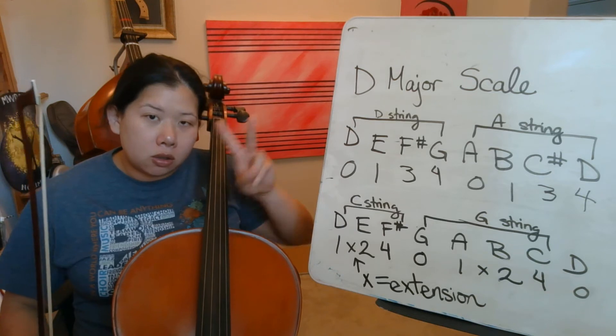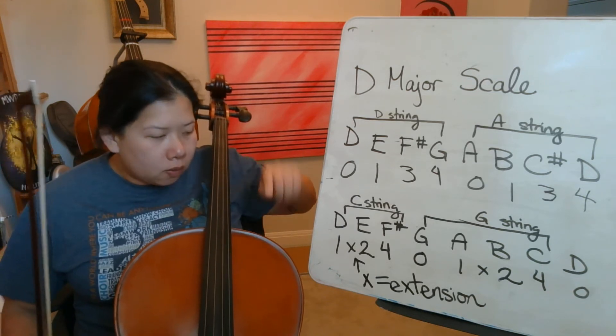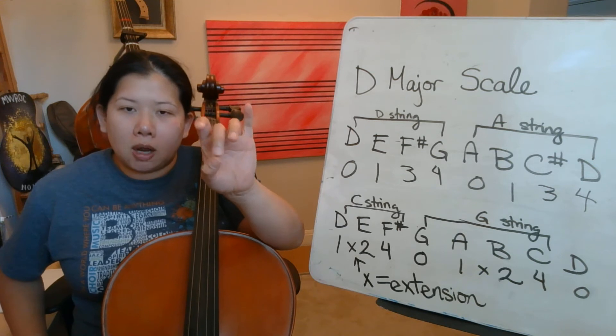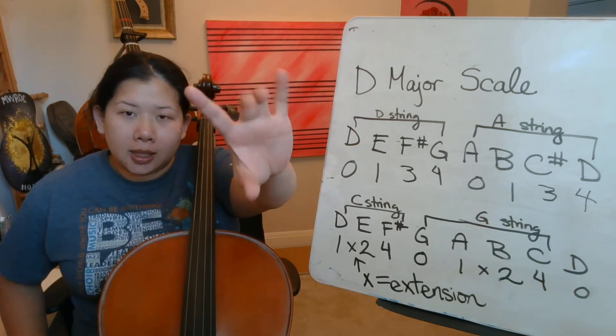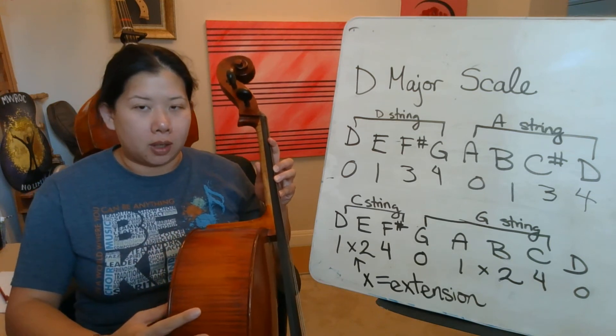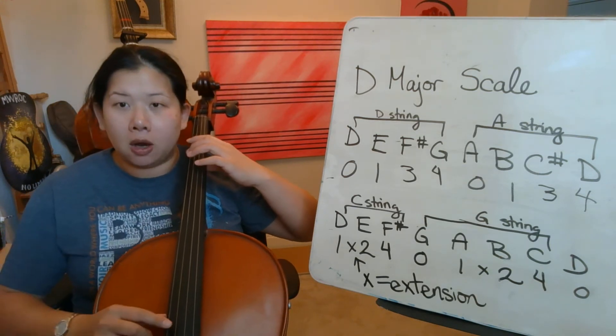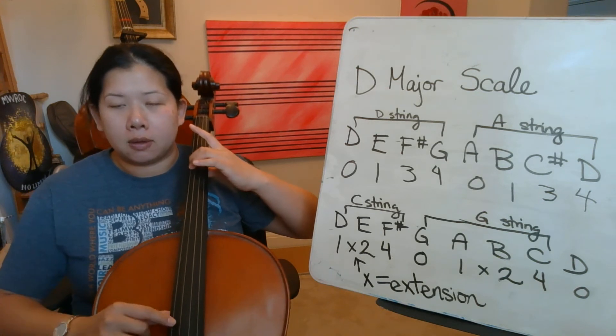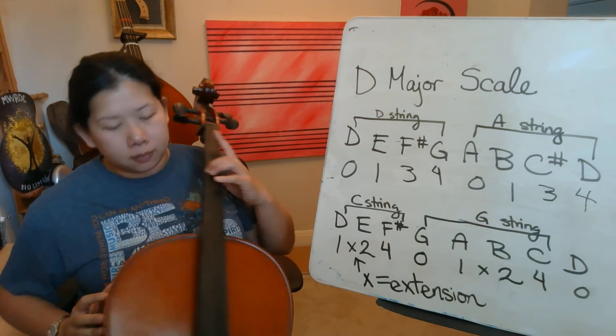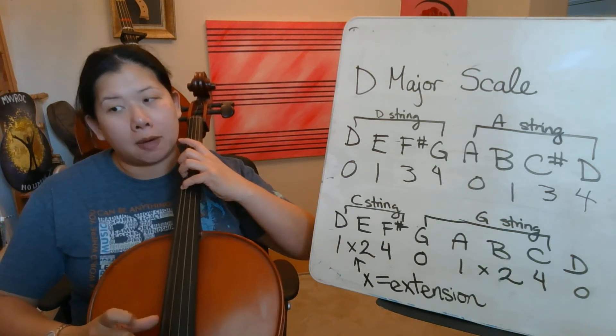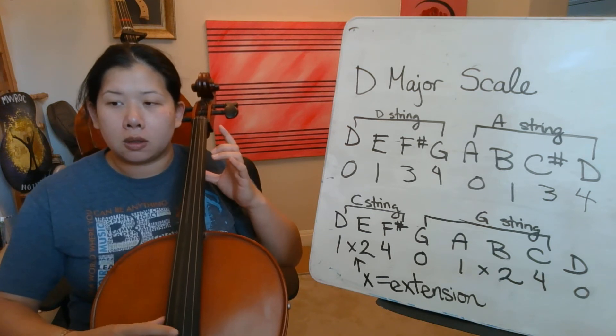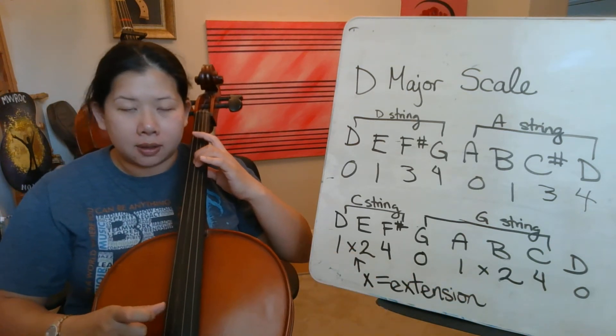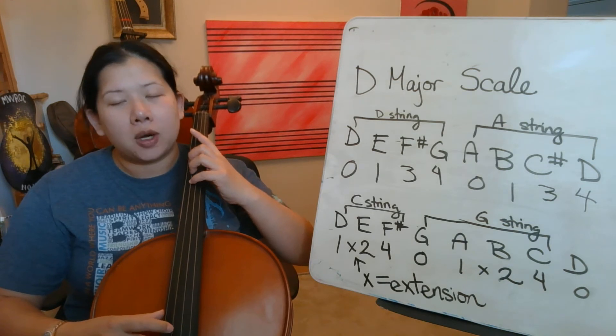So now we're going to do the D major two octaves, so we're going to start on the C string. When you see an X on the music it means extension. Extension means first and second finger stretch, so second finger's going to be red and remember your thumb's always behind second finger. Thumbs behind which finger? Second finger. So like this on the side. So your first finger, that's fine, first note is D on the C string, lowest string. D, the second finger on the red tape, E, and check your thumb is behind second finger. E, fourth finger F sharp white tape.